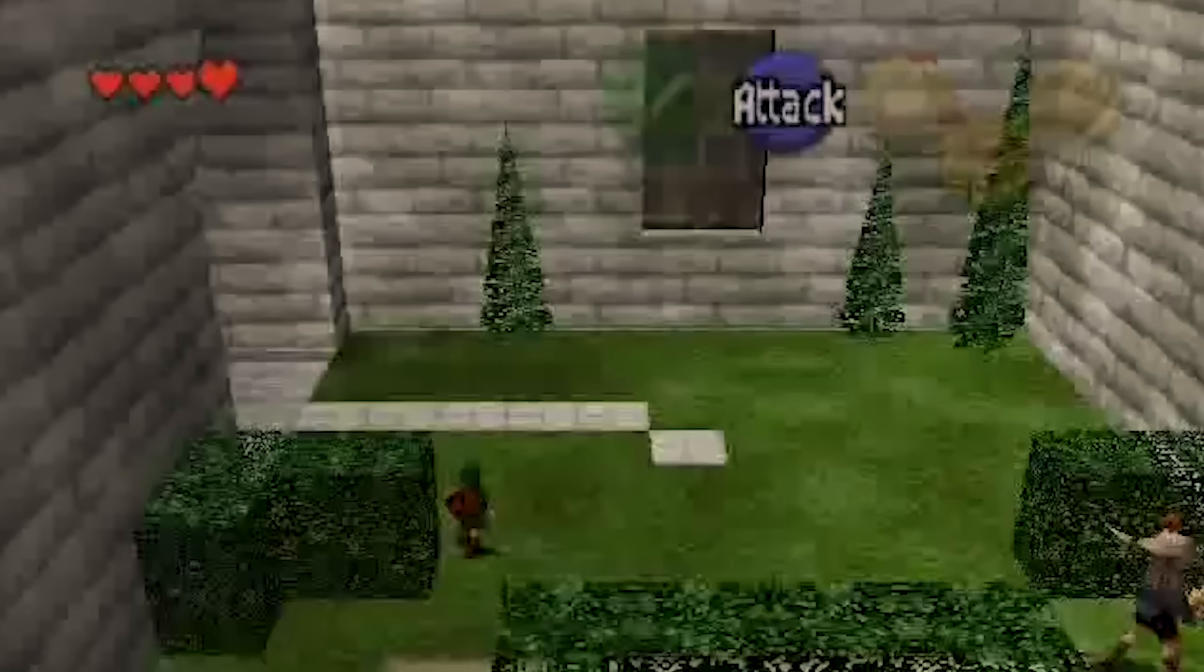Like how should the game determine whether a guard sees you or not as you navigate an area? Well what the game could do is first assign a field of view to the guard that would span some angle. Then to determine whether your character is within that field, the game could calculate the unit normal vector for that guard, which points in the direction they're facing. And then it could create another unit vector going from the guard to your character.